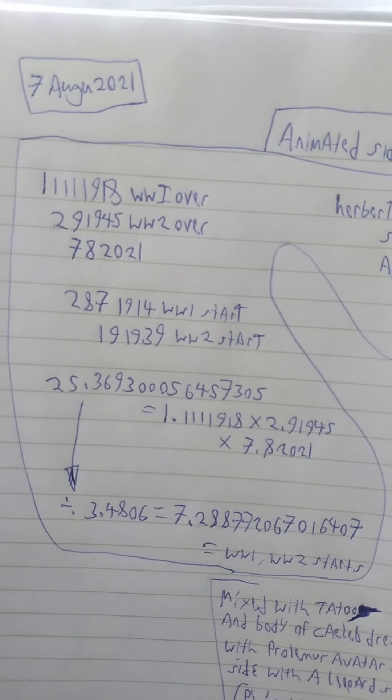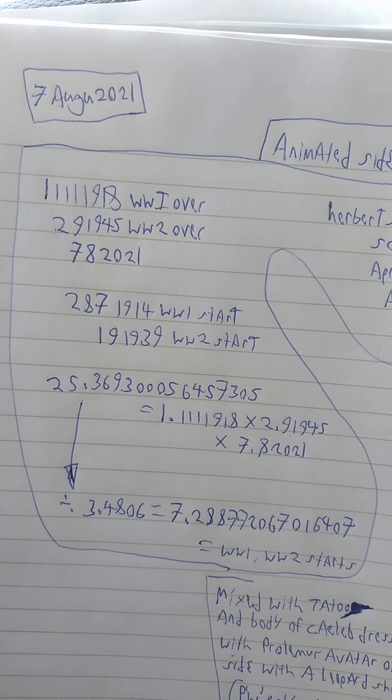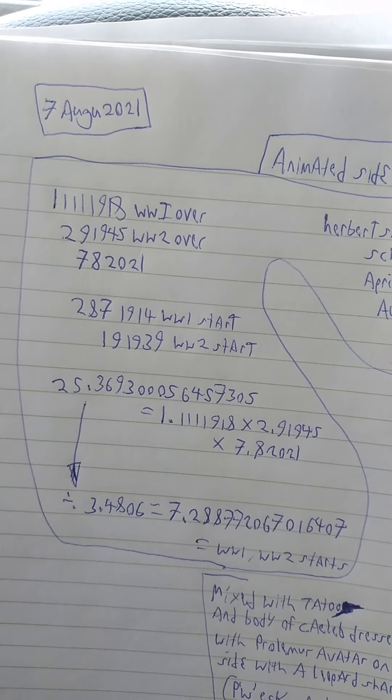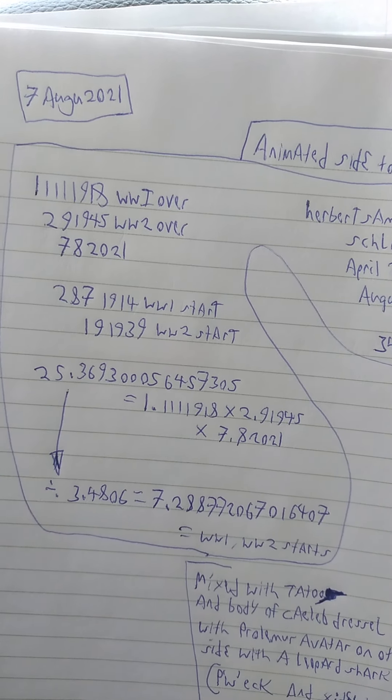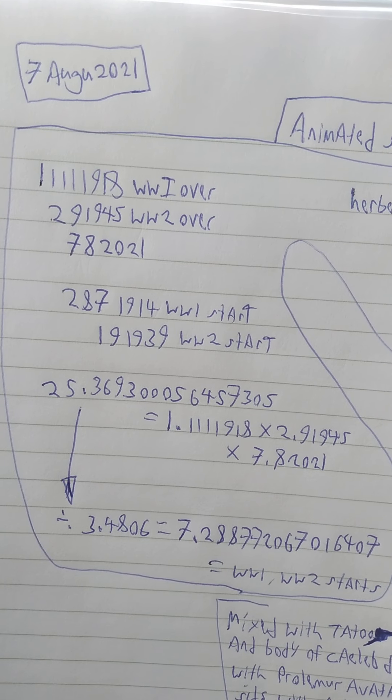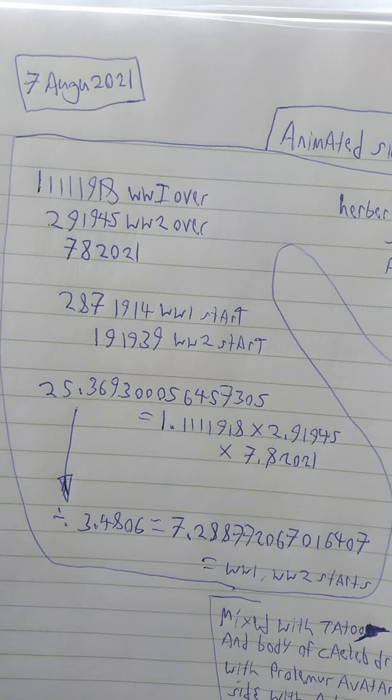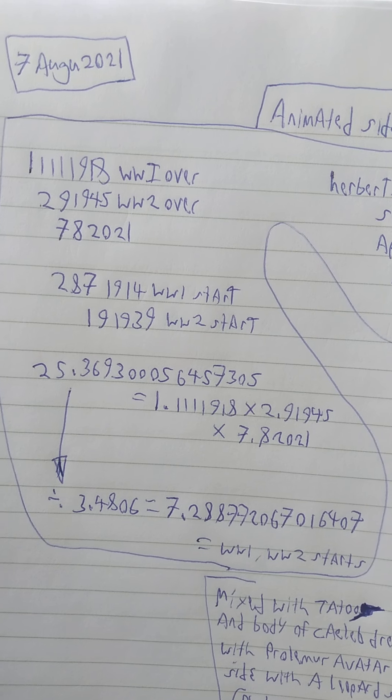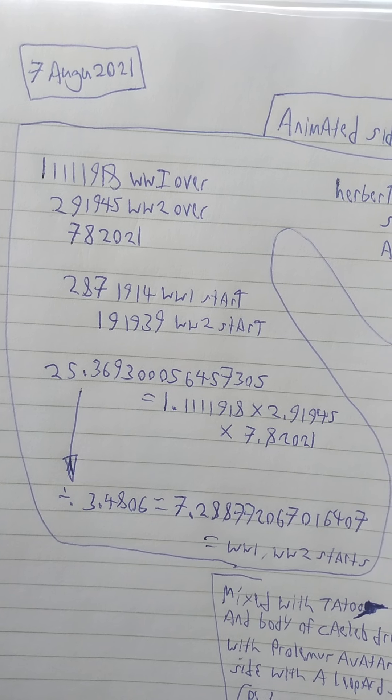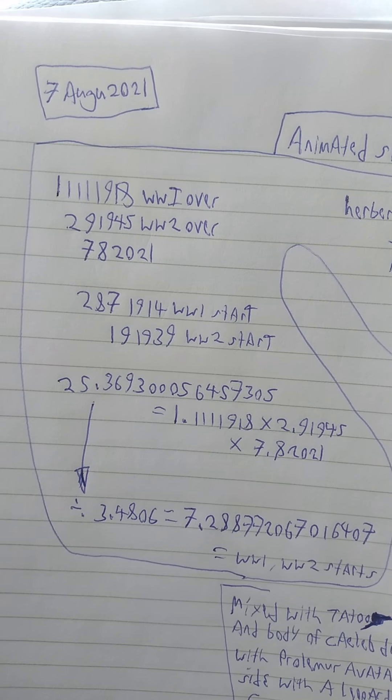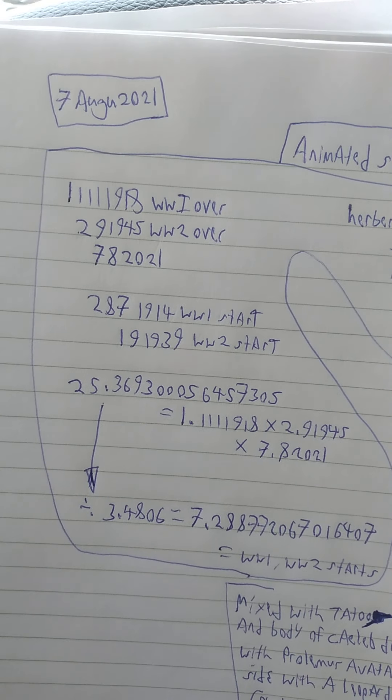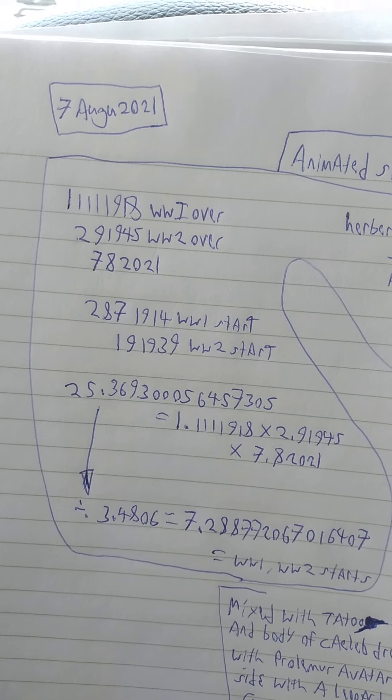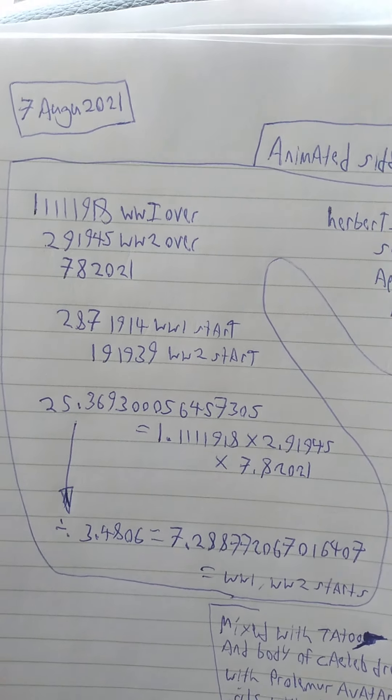Just going over some dates here. It looks like quadruple 1, plus 1, 918, World War I over. 291945, World War II over. 782021, that was yesterday. And this is going by the day, the least amount to the month to the year. That's how I like to do it.